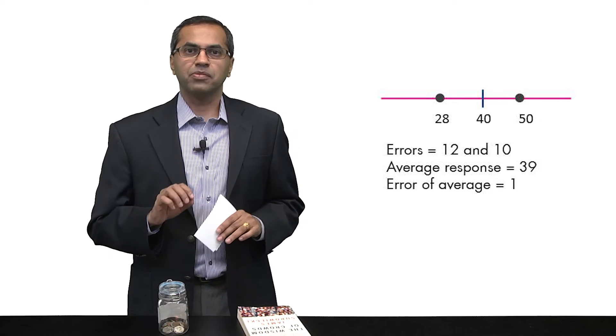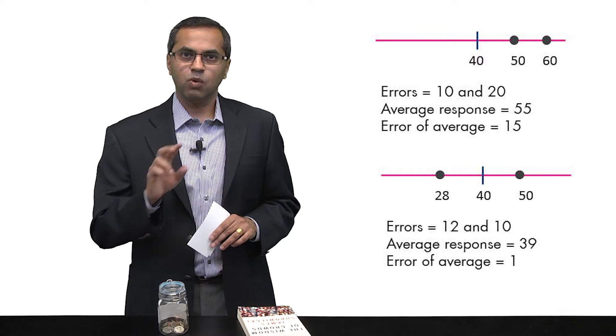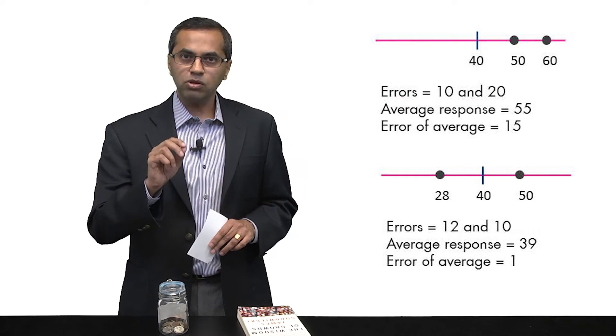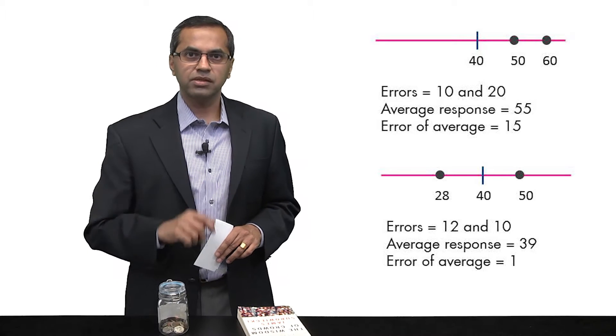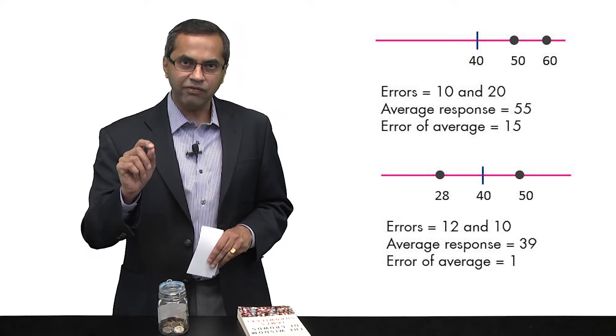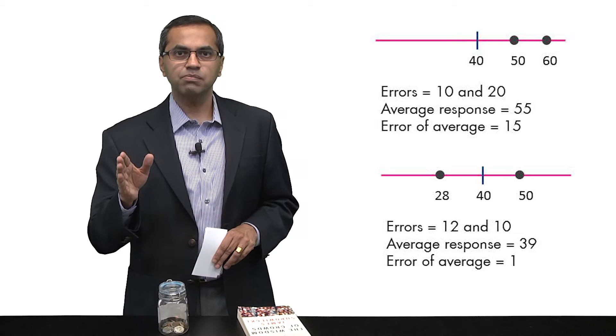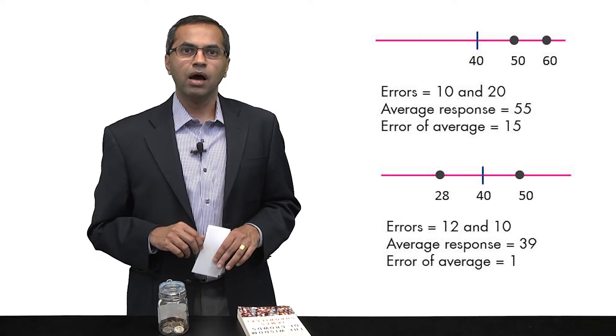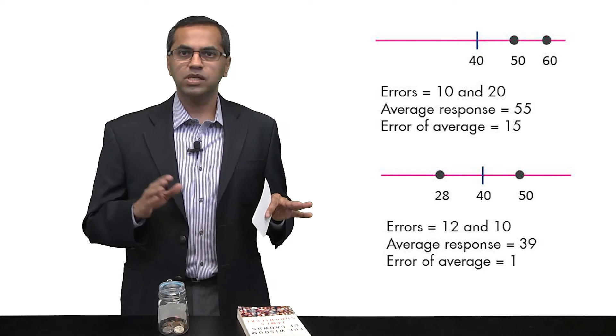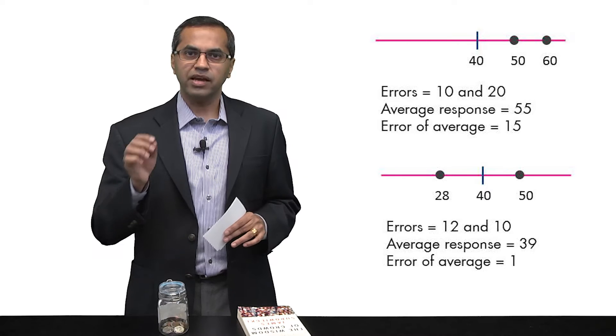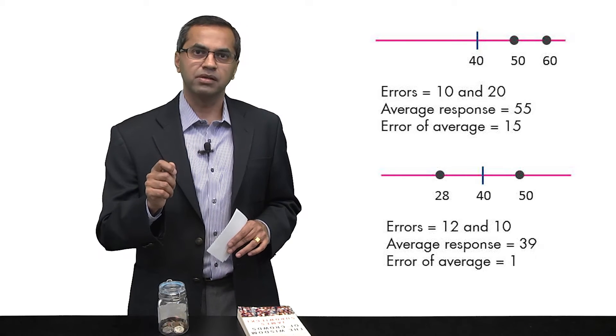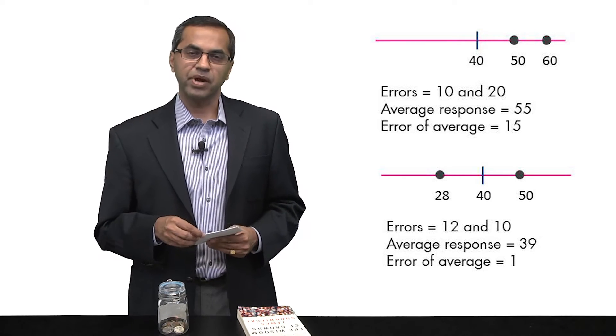So just to sum up, if you ask people for estimates, one of two things could happen. Thing number one, both of those judges over- or under-predict, in which case your average is better than one judge but not as good as the other one. Or one under-predicts, one over-predicts. If that happens, the average is always going to be better than either of the two judges independently.